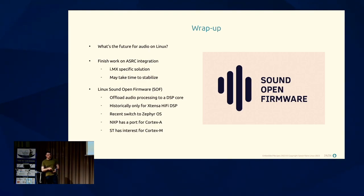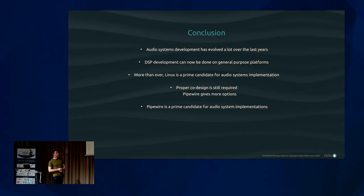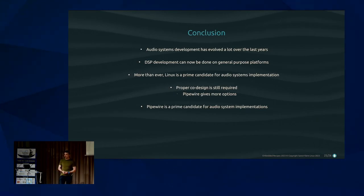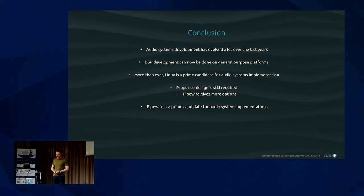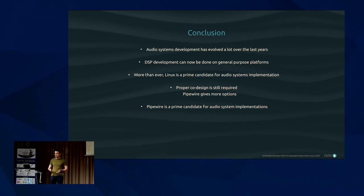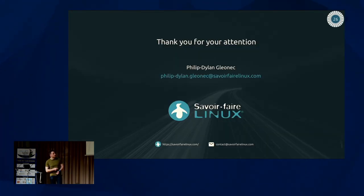I'm hopeful that at some point we won't need any hardware ASRC, because it will be possible to do sample rate conversion in DSP directly on chip. To conclude: audio system development has evolved a lot, we don't strictly need a dedicated DSP anymore — general-purpose chips are much cheaper to develop for. Linux is more than ever a prime candidate, with near-integrated real-time support and broad interface support. Proper system design is still required, but PipeWire gives way more options and makes it a lot easier. Can PipeWire be the heart of a Linux audio system? Yes, it can.